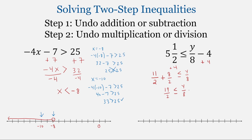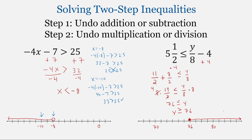So now we'll undo this division by multiplying both sides by 8. We can do some simplification first before we multiply. So 4 times 19 is 76, less than or equal to y. Rewriting with the variable on the left, we get y greater than or equal to 76. Graphing this, we'll put a closed circle at 76 because 76 is a solution — it's in the solution set. And then we'll shade everything greater than 76, so all numbers greater than or equal to 76 are solutions to this inequality.